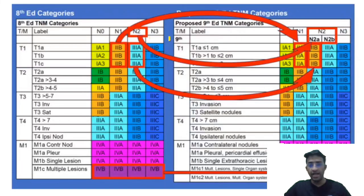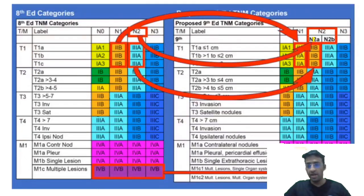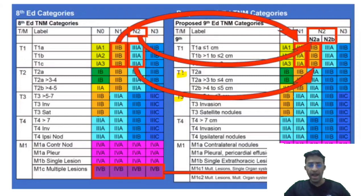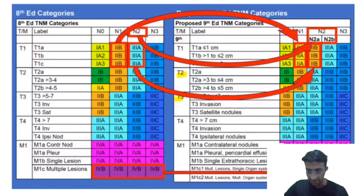To revise the changes between the 8th and 9th editions: T1, N1 moved from stage 2B to 2A. T1, N2 is now divided — T1, N2A is stage 2B and T1, N2B is stage 3A. For T2 and T3 with N2A, it is stage 3A; with N2B, it is stage 3B. M1C1 and M1C2 are both stage 4B, similar to M1C being 4B in the 8th edition.